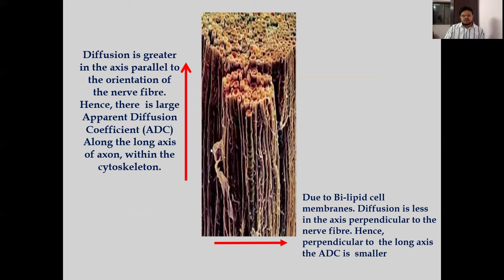Like in this nerve fiber, we can see that the diffusion is greater in the axis parallel to the orientation of the nerve fiber, leading to a larger apparent diffusion coefficient (ADC) along the long axis of the axon. However, due to the bilipid cell membrane, the diffusion is less in the direction perpendicular to the nerve fiber, leading to a lower ADC.